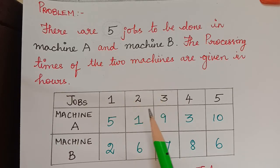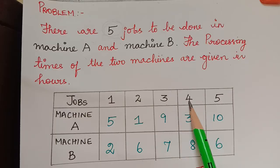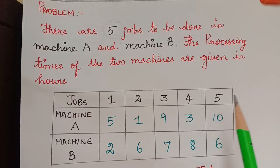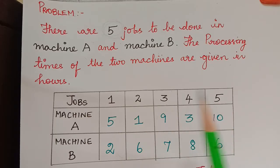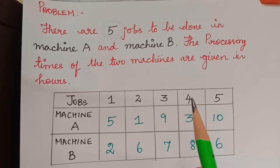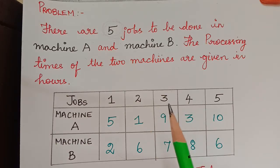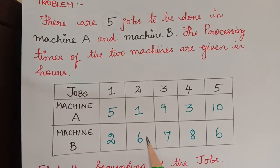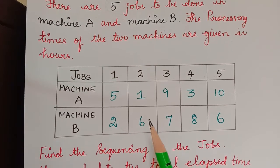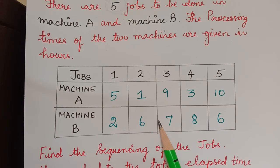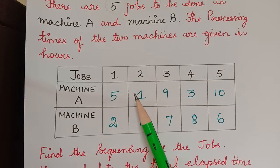We have to find the order in which the jobs have to be performed, and the total time to complete the jobs should be minimum. That is the aim of the sequencing problem. These are the processing times given. Processing time is the time required by a job on each machine.